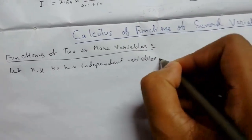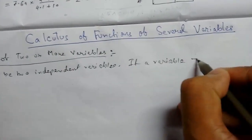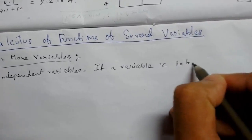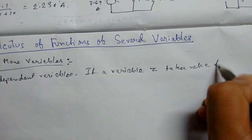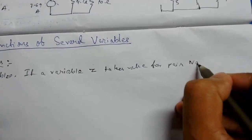So if a variable z has the value or takes the value for pair values of x comma y.